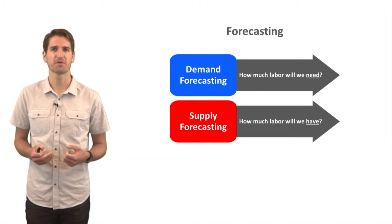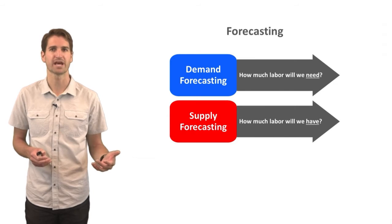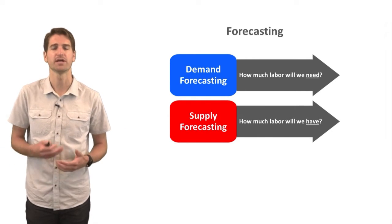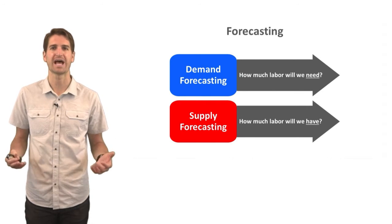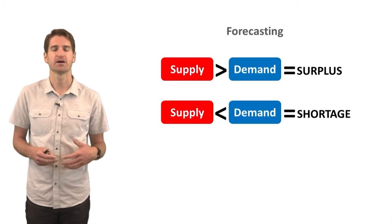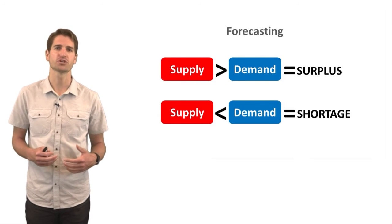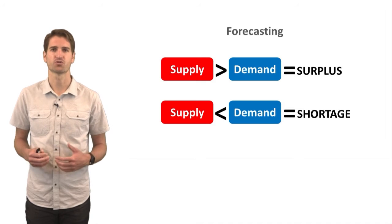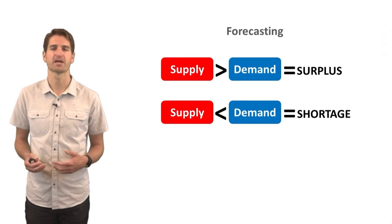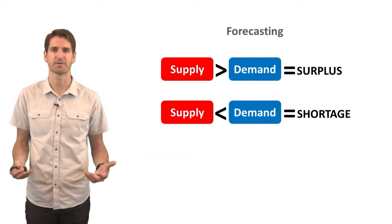When thinking about forecasting, we can think about two different areas: demand forecasting, which is projecting how much labor we will need in the future, and supply forecasting, which refers to how much labor we will have to meet that demand. Using basic economics terms — surplus and shortage — when supply is greater than demand, we're talking about a surplus, and when supply is less than demand, we're talking about a shortage.